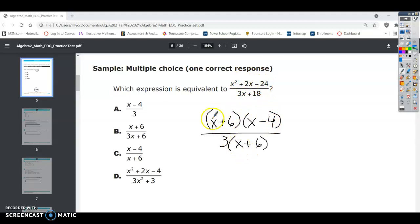Alright, when we do that, we know that when we're dividing, anything divided by itself will cancel and equal 1. So that means we're left with x minus 4 divided by 3. And that's going to be answer A. So for the sample question, the correct answer is A.